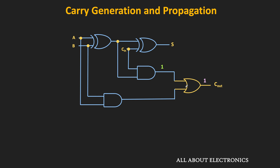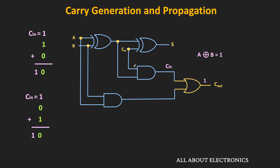Now let's look at the upper AND gate. Its inputs are A XOR B and C_IN, where C_IN is the input carry from the previous stage. The output is 1 when both C_IN and A XOR B are 1 — meaning the incoming carry propagates to the next stage only when A XOR B equals 1. If A XOR B equals 0, the input carry won't propagate. The carry propagates when A=1, B=0 or A=0, B=1 — in other words, when A XOR B = 1. This function A XOR B defines carry propagation, denoted as P, where P = A XOR B.